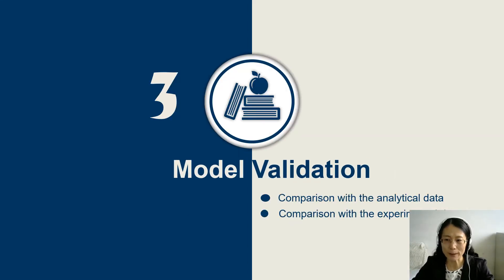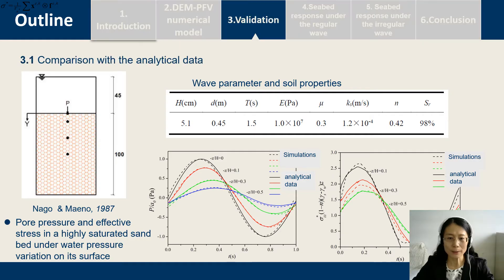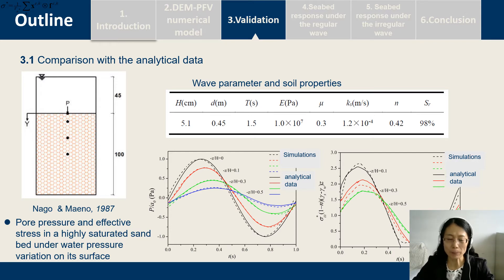The third part is the model validation. We compare with analytical solutions and experimental data. First, we test the comparison with the analytical data. These are the wave parameters and soil properties. This is the simulation result and the solid line is the analytical data. This shows the pore water pressure and the effective stress.